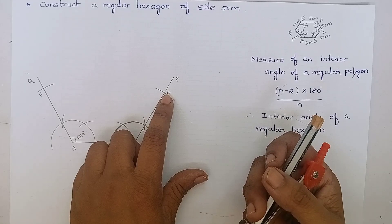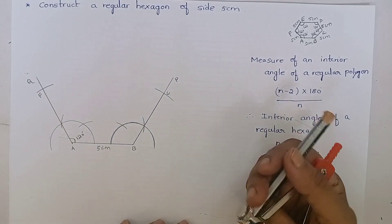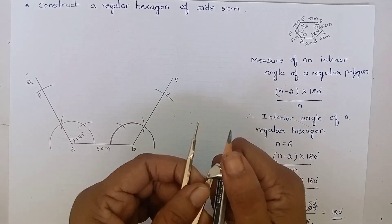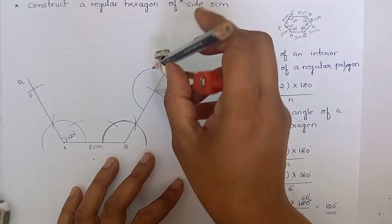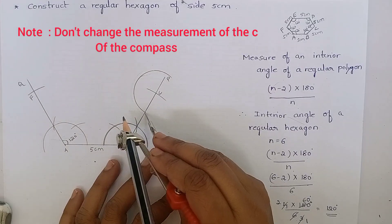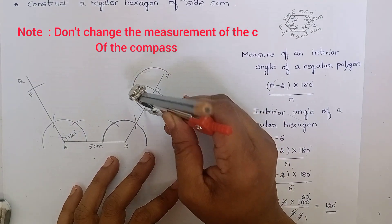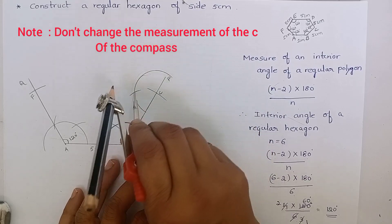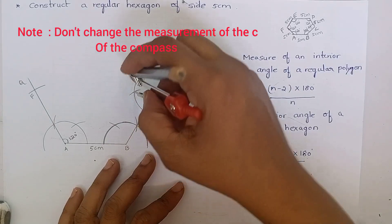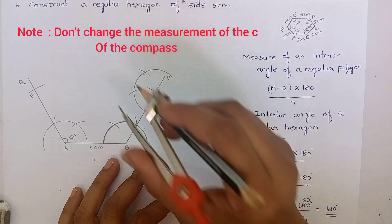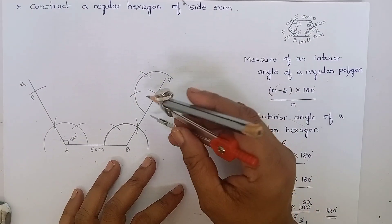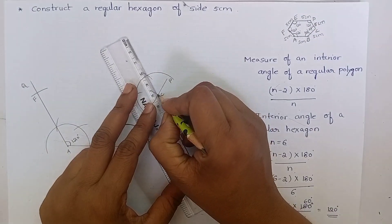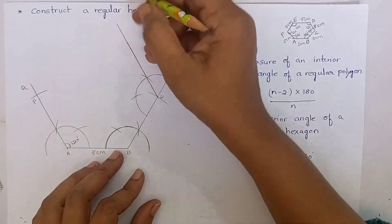Now construct 120 degrees at point C and F. To construct 120 degrees, adjust your compass to any measurement of your choice. Keep the compass at point C and draw an arc. Keep the compass at this point and cut an arc. Keep the compass at this point and cut another arc. Remember, this is very important — while cutting this arc, you should not change the measurement of the compass. Now produce this line and name this produced line as R.